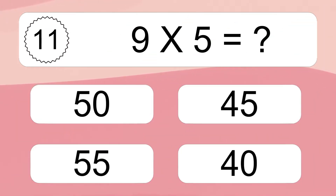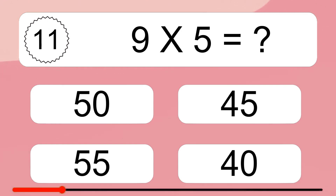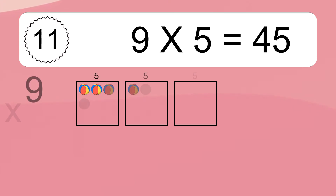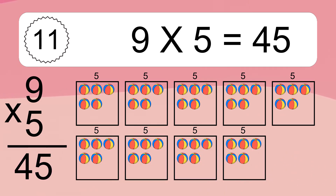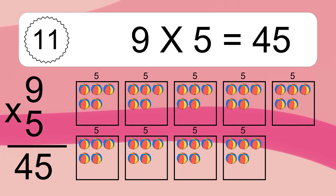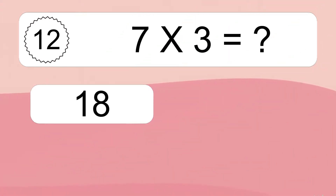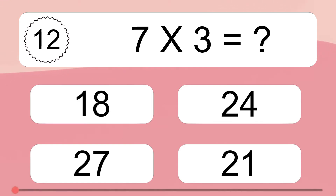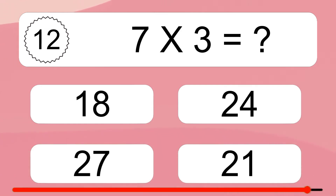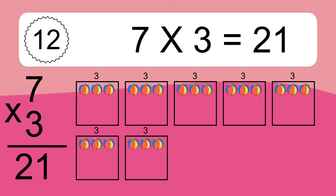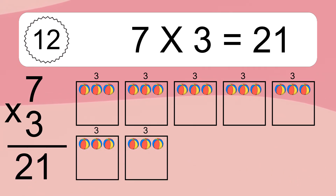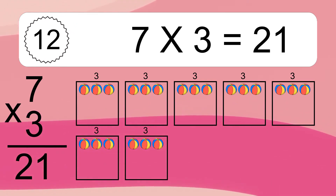Nine times five equals what? Nine times five equals 45. We have nine boxes, and each box has five colorful balls inside. If you count all the balls in all the boxes together, you will have nine times five balls. This equals 45 balls. Seven times three equals what? Seven times three equals 21. We have seven boxes, and each box has three colorful balls inside. If you count all the balls in all the boxes together, you will have seven times three balls. This equals 21 balls.